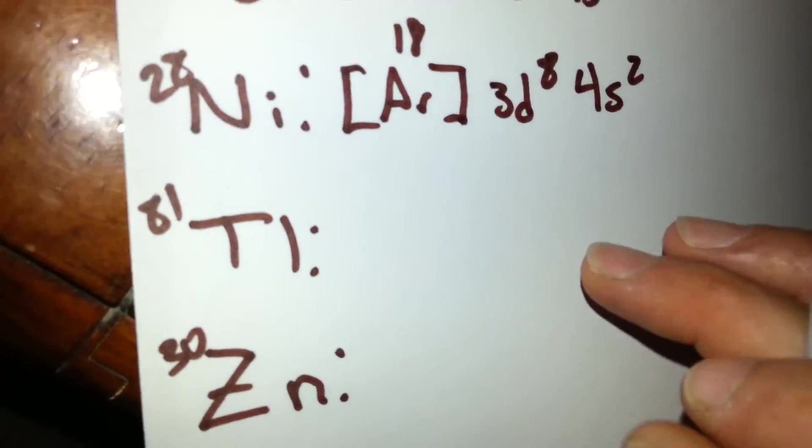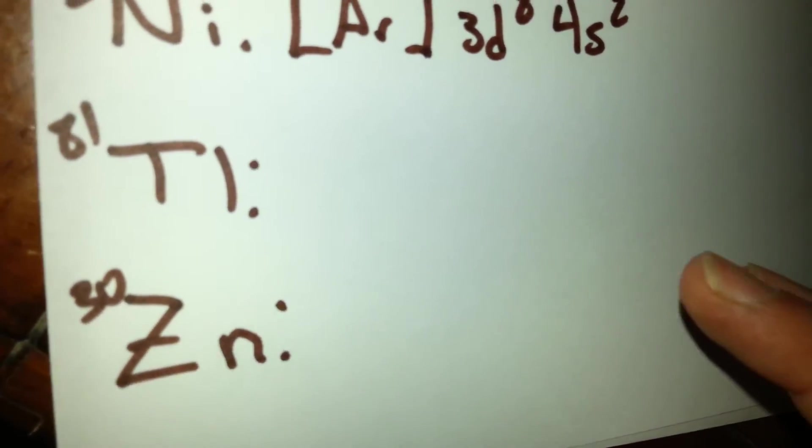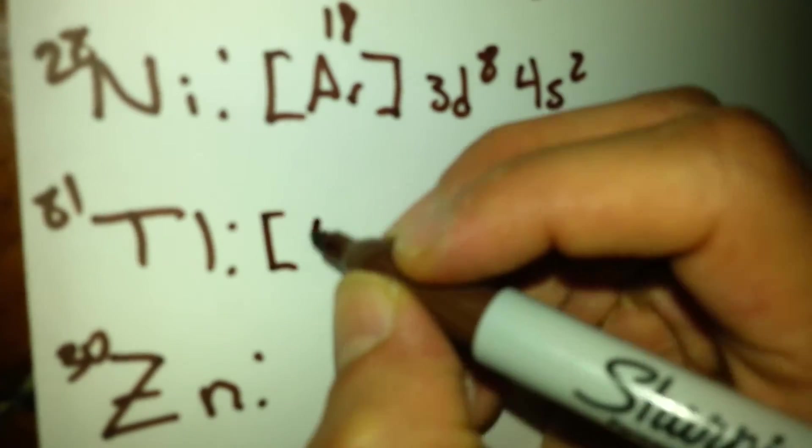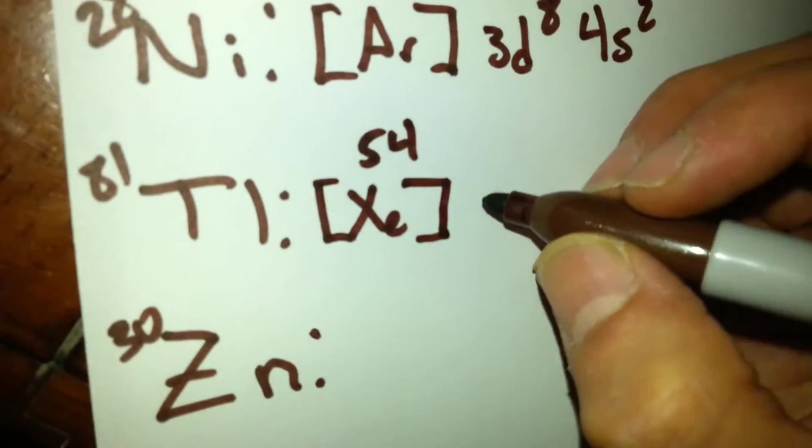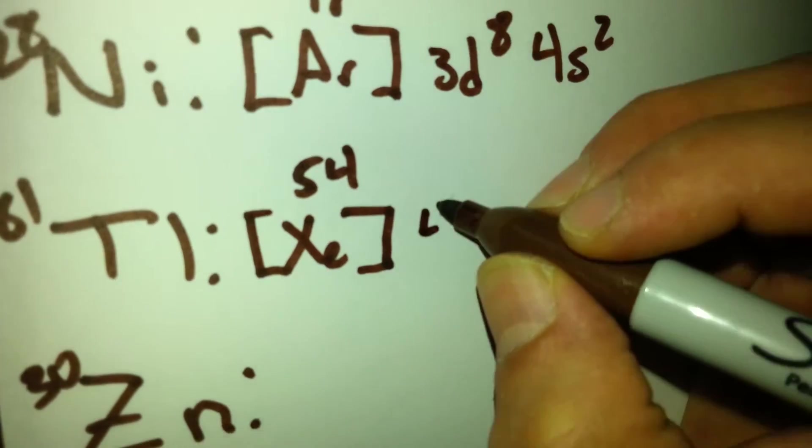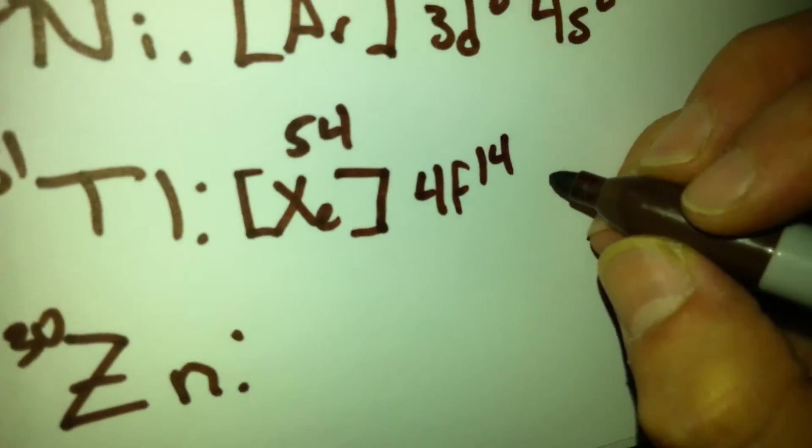Then, we are going to look for thallium. For this one, we utilize xenon, which has 54. After that, we have the 4f orbital full with 14.